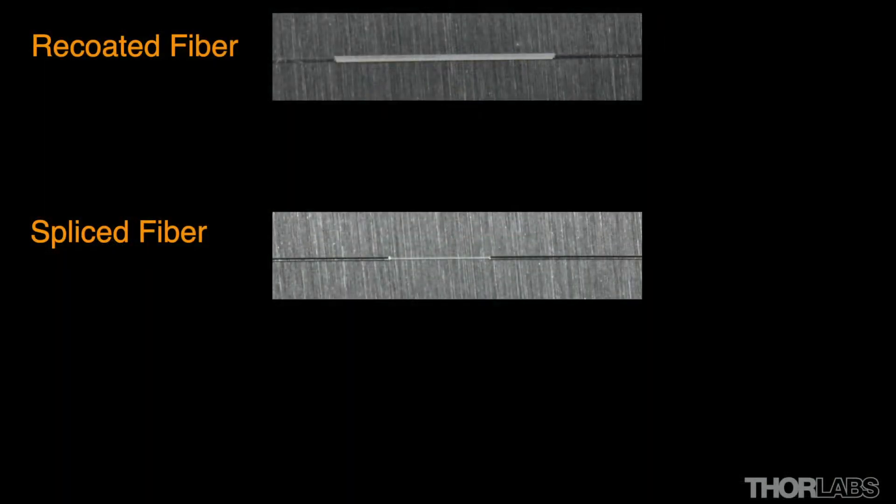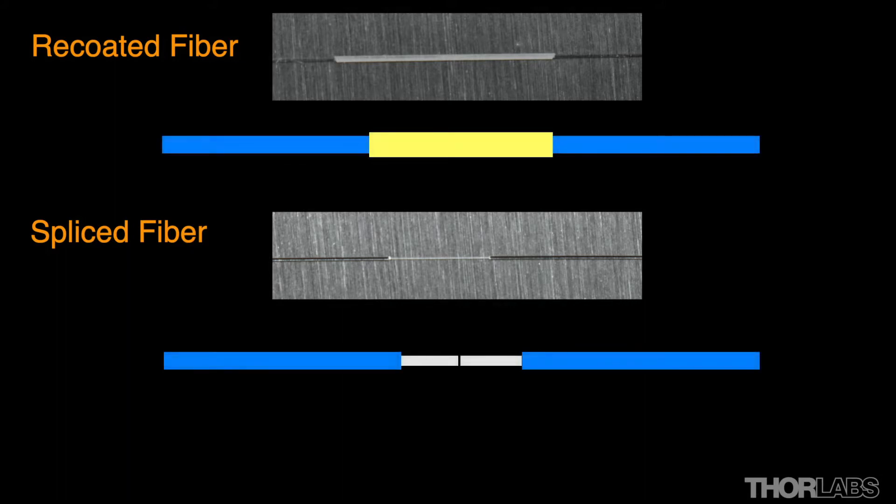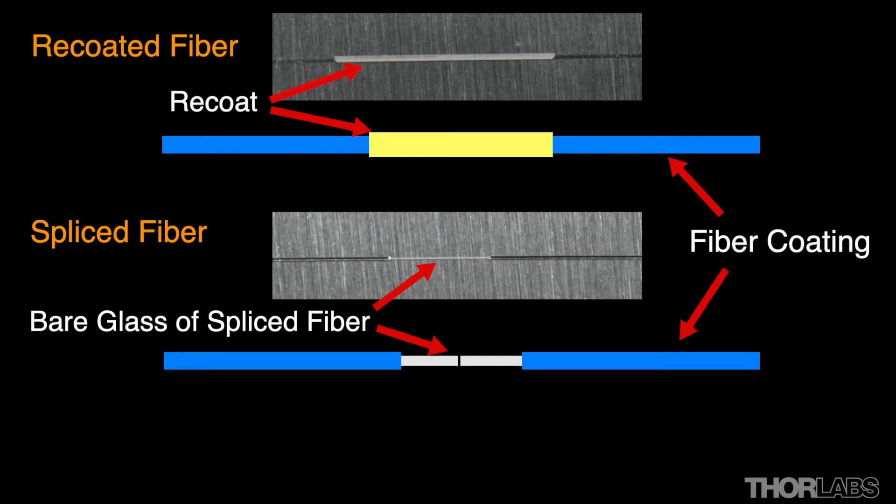Recoating is where a polymer, similar to the original fiber's polymer coating, is restored to the region of glass around the splice. This helps to protect the glass from mechanical and environmental damage.